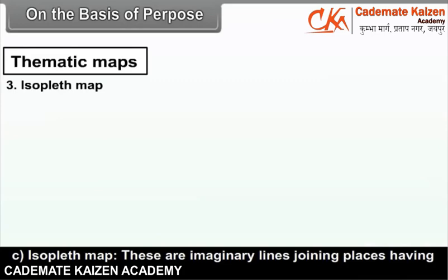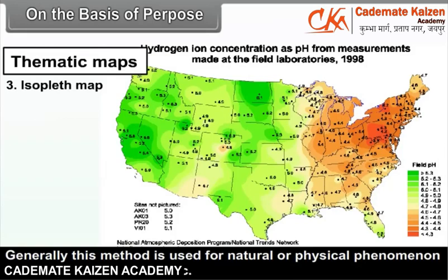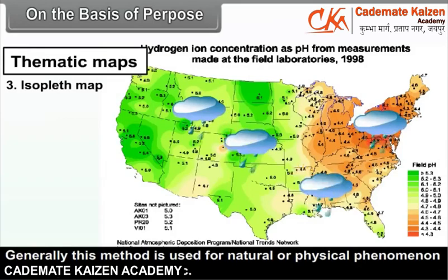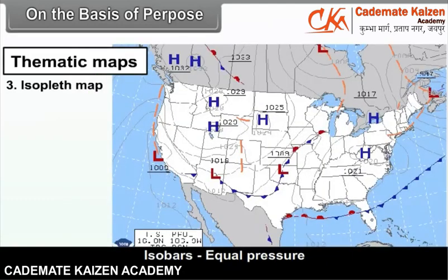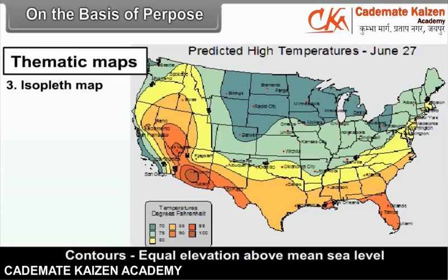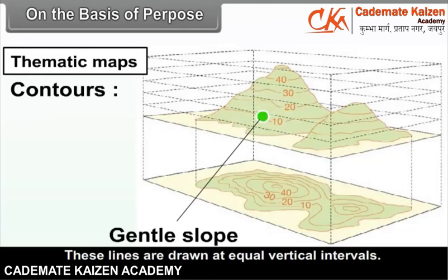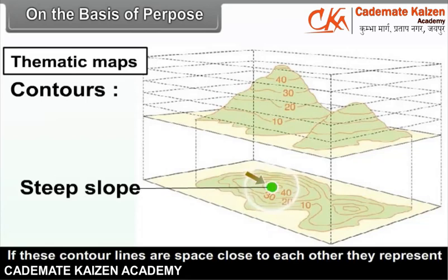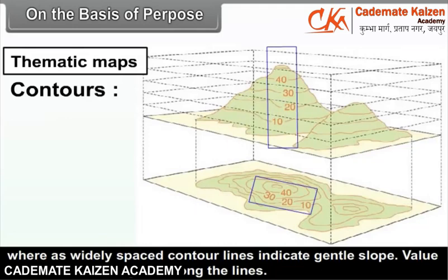Isopleth map: these are imaginary lines joining places having the same value. Generally, this method is used for natural or physical phenomena like temperature, rainfall, etc. Isotherms — equal temperature; Isobars — equal pressure; Isoheights — equal rainfall; Contours — equal elevation above mean sea level. Contours are imaginary lines joining all places of the same height above sea level, drawn at equal vertical intervals. If contour lines are spaced close to each other, they represent a steep slope, whereas widely spaced contour lines indicate a gentle slope. The value of the contours is given along the lines.